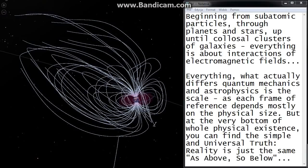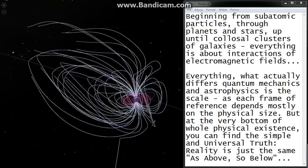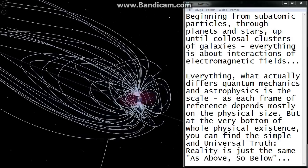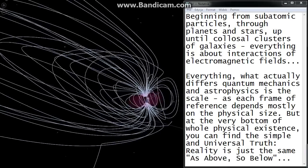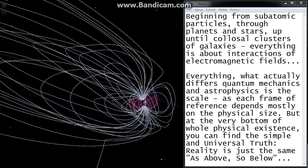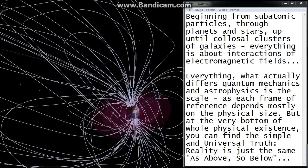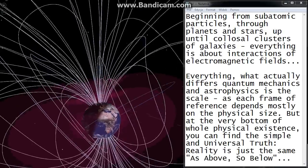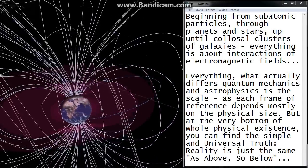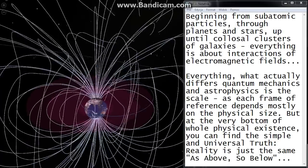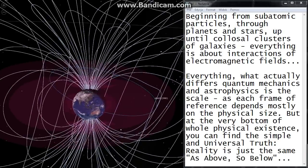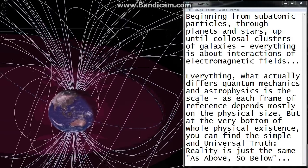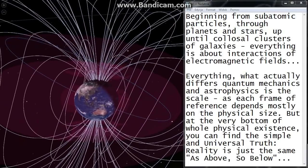Beginning from subatomic particles through planets and stars up until colossal clusters of galaxies, everything is about interactions of electromagnetic fields. Everything that actually differs quantum mechanics and astrophysics is the scale, as each frame of reference depends mostly on the physical size. But at the very bottom of whole physical existence, you can find the simple and universal truth. Reality is just the same as above, so below.